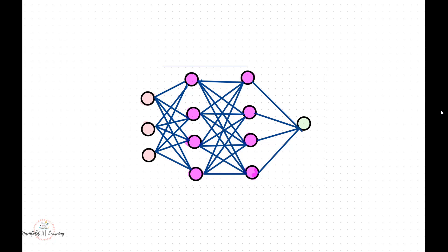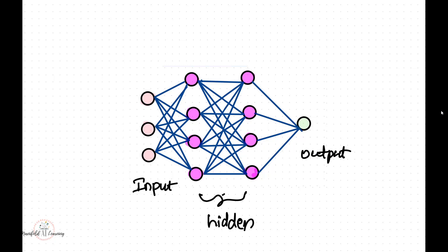When I talk about a deep learning neural network, this is how it would look like. It will have some input layer, some hidden layer, and also some output layer. If you look at the screen, one neuron in one layer is connected to every other neuron in the next layer. We call this type of connection a dense connection.